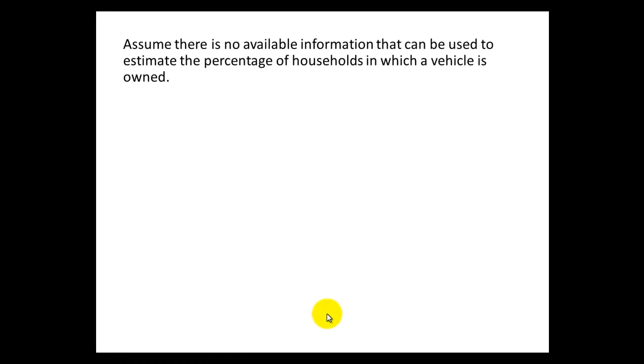Here's part B. Assume there's no available information that you can use to estimate the percentage of homes that have a car. So when there's no available information for your sample proportion, that is p hat, then we often take the route where we'll let p hat and q hat both equal 0.5.